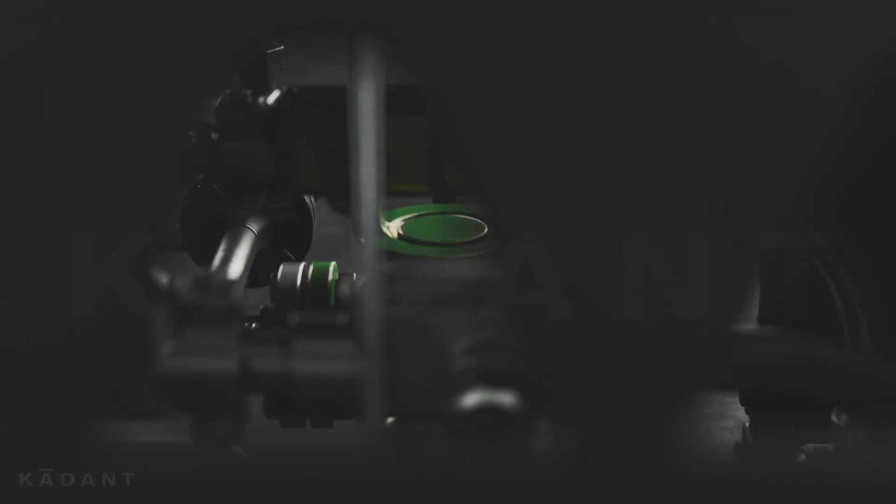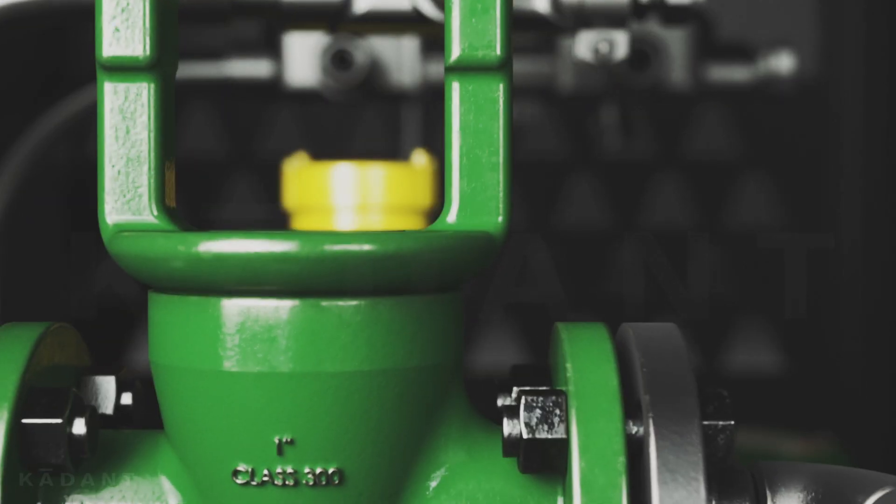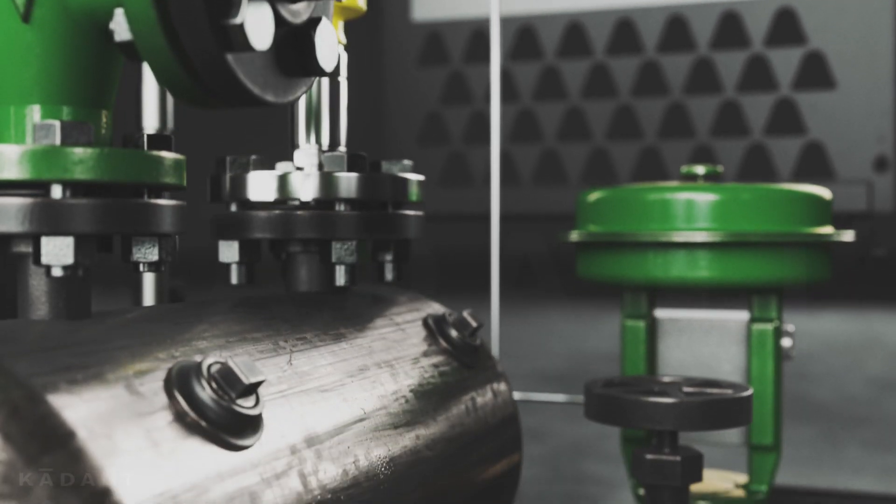The ThermoZone condensate handling station enables corrugators to run their double backer at the low steam pressures needed for flat lightweight board.